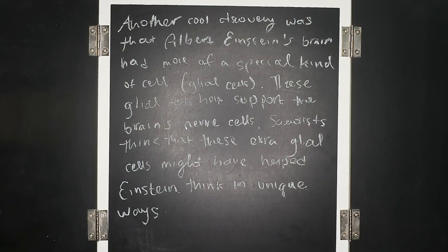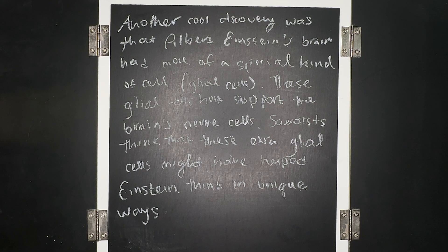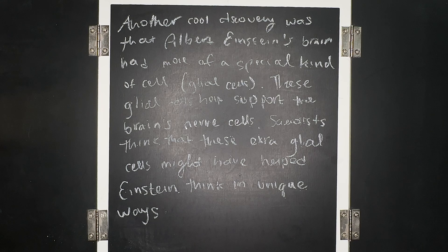Another cool discovery was that Albert Einstein's brain had more of a special kind of cell, called glial cells. These glial cells helped support the brain's nerve cells. Scientists think that these extra glial cells might have helped Einstein think in unique ways.